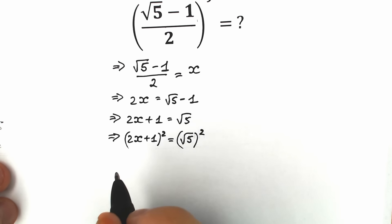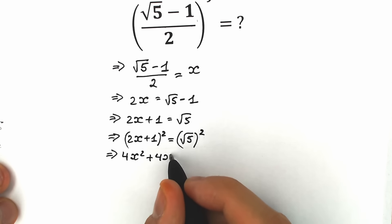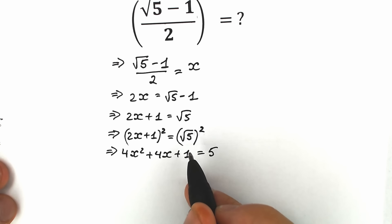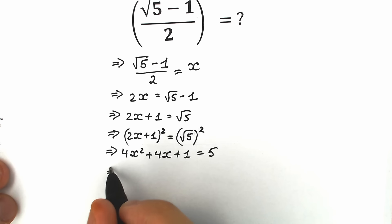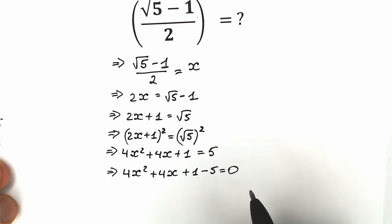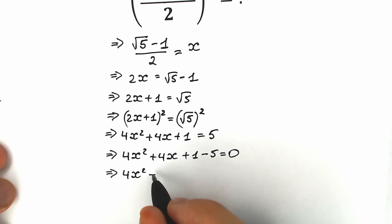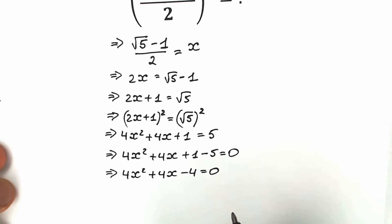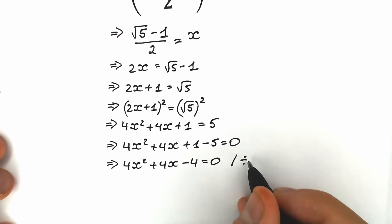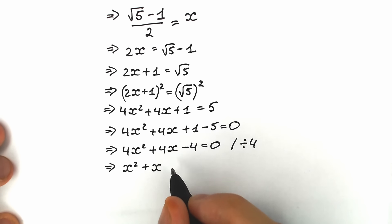Right now we can easily expand this — it's a school identity. As a result we have 4x squared plus 4x plus 1 equal to 5. Let's bring the 5 from the right side to the left side. We get 4x squared plus 4x plus 1 minus 5 equal to 0. Since 1 minus 5 equals minus 4, we have 4x squared plus 4x minus 4 equal to 0. Now let's divide both sides by 4. We get x squared plus x minus 1 equal to 0.